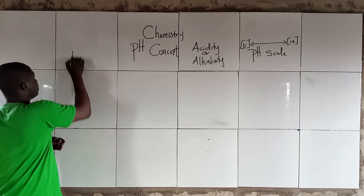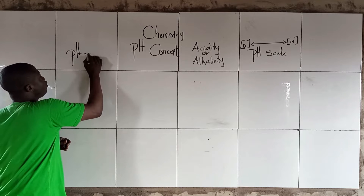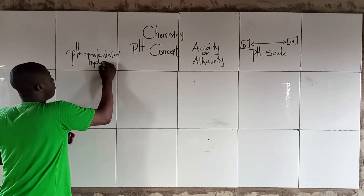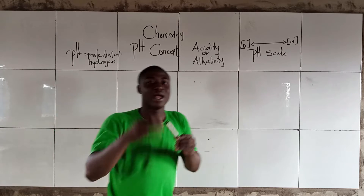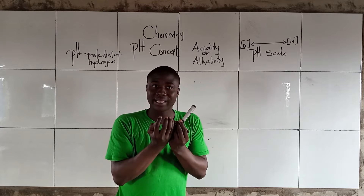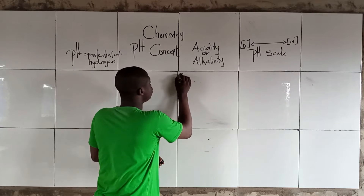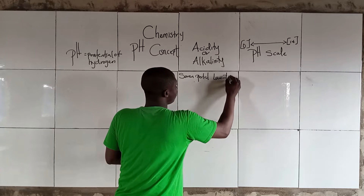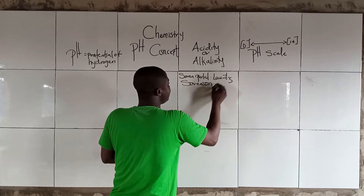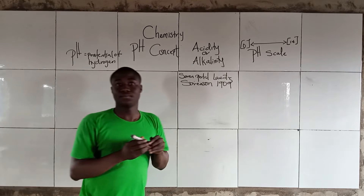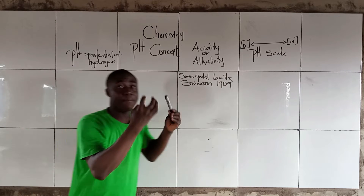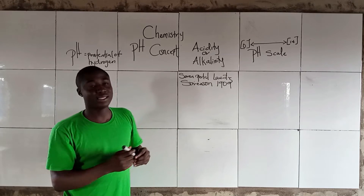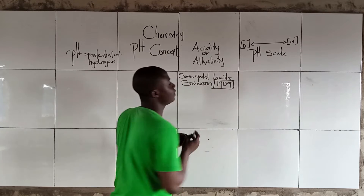The term pH simply means 'potential of hydrogen.' It was first coined by a man called Søren Peder Lauritz Sørensen in the year 1909.